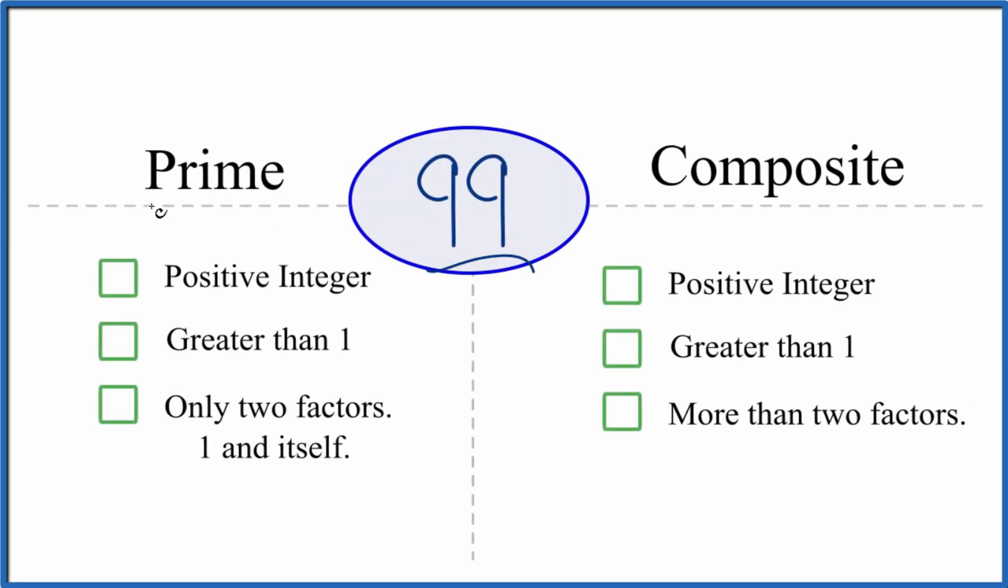So is 99 a prime number or a composite number? Here's how you can tell. Let's look first whether 99 is prime.